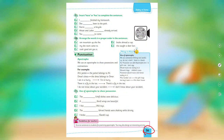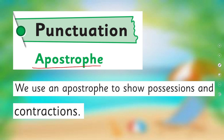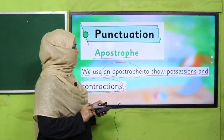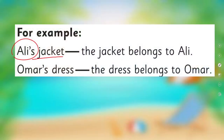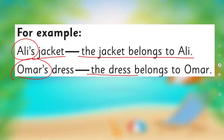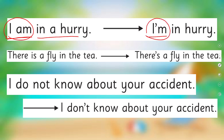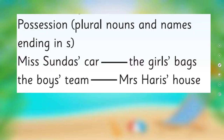Open your book on page number 56. We use an apostrophe to show possession and contraction. 'Ali's jacket' — the jacket belongs to Ali. 'Umar's dress' — the dress belongs to Umar. And 'I am' in a hurry can be written as 'I'm' — as you studied in Grade 2, this is the weak form. Also 'there's a fly.' So apostrophe has another use too, but today our focus is showing possession.